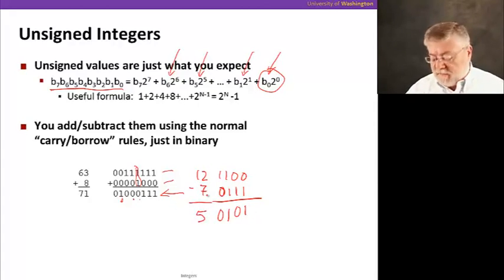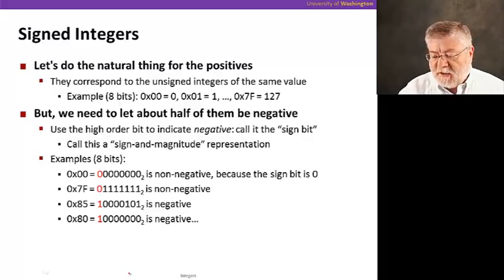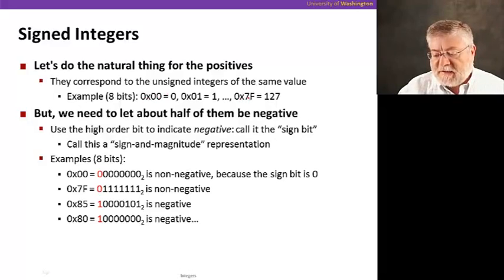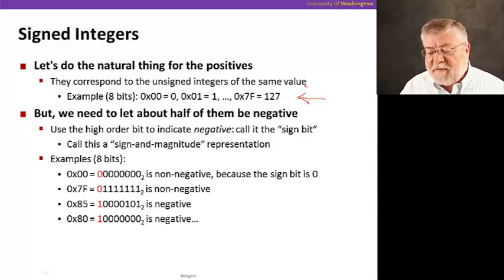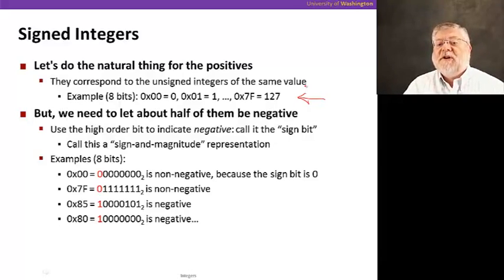So that's the basics of addition and subtraction in binary. Let's do the natural thing for representing positive numbers — they're going to correspond to all the unsigned integers of the same value. So in eight bits, for example, we can go from hex 00 to hex 7F and represent 127 different positive numbers. But since we need about half of them to be negative, we're going to save the other half, from 128 to 255, to represent negative numbers rather than those larger positive numbers.